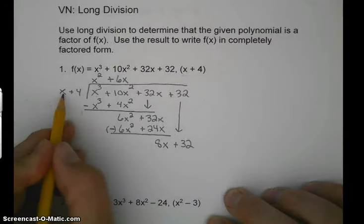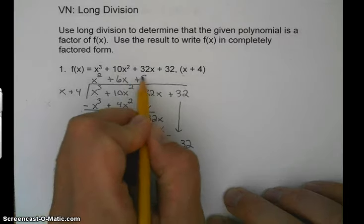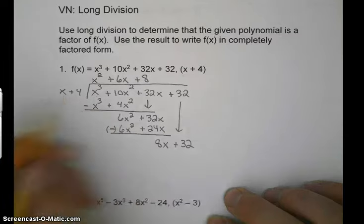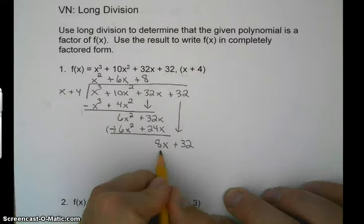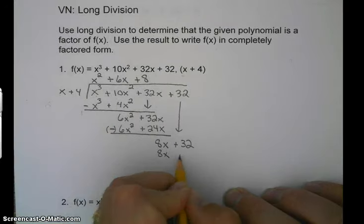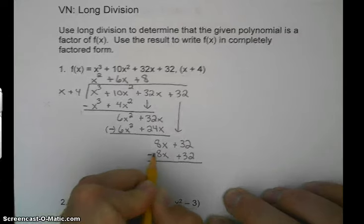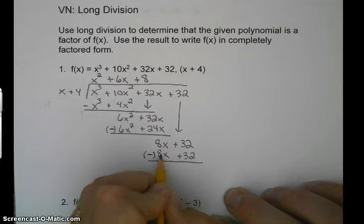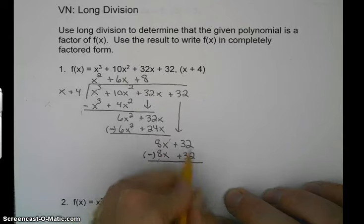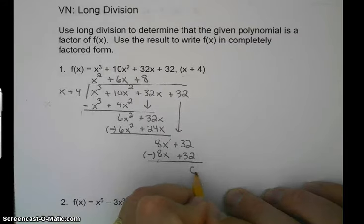Again, back to the x. x times what is 8x? 8. So 8 times x is 8x. 8 times 4 is 32. And then we subtract. 8 minus 8 cancels. 32 minus 32 cancels. So we have a remainder of 0.